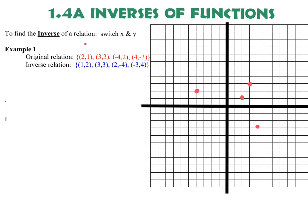So I take (2, 1) and turn it into (1, 2). That's there. And I take (3, 3). Well, I switch it, I still get (3, 3). (-4, 2) becomes (2, -4) down here. And (4, -3) is now (-3, 4) up here.